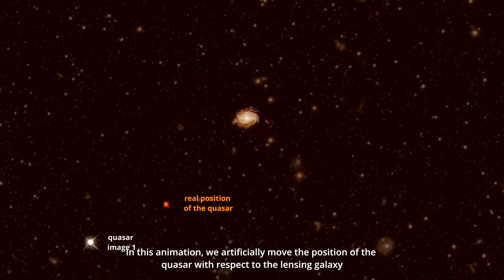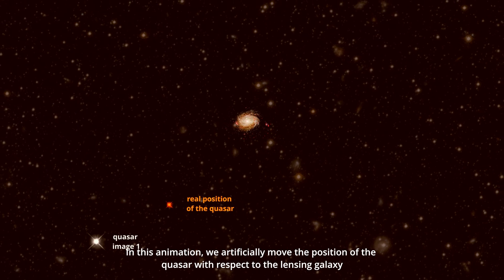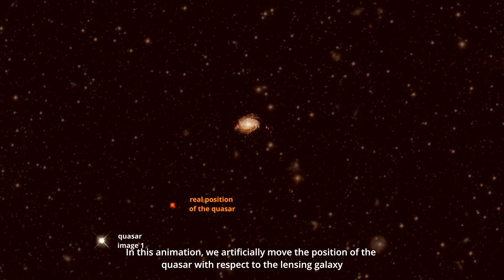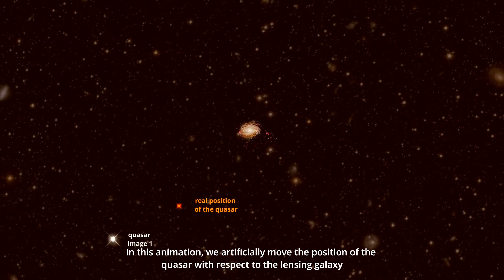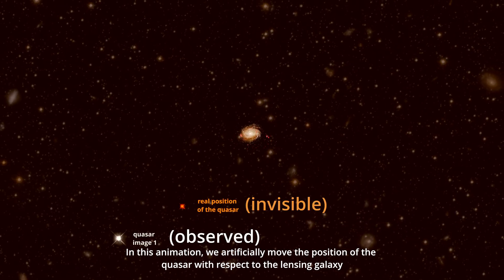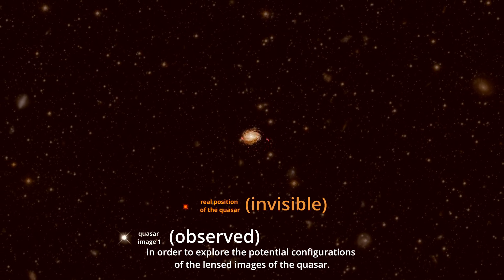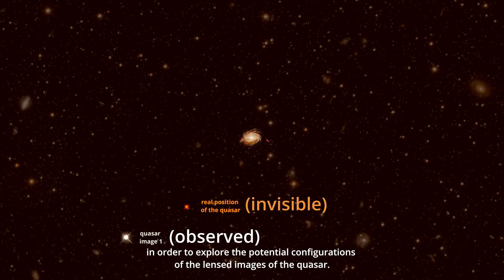In this animation, we artificially move the position of the quasar with respect to the lensing galaxy in order to explore the potential configurations of the lensed images of the quasar.